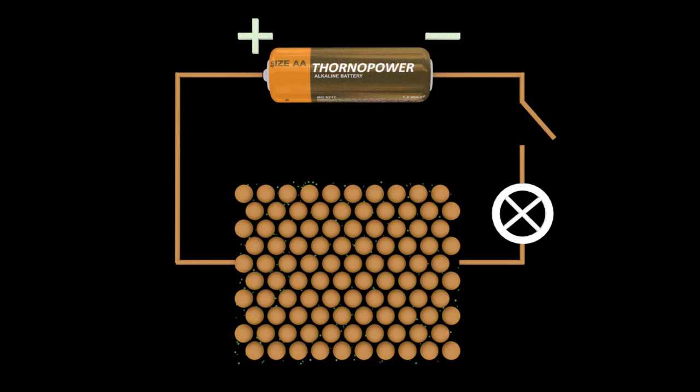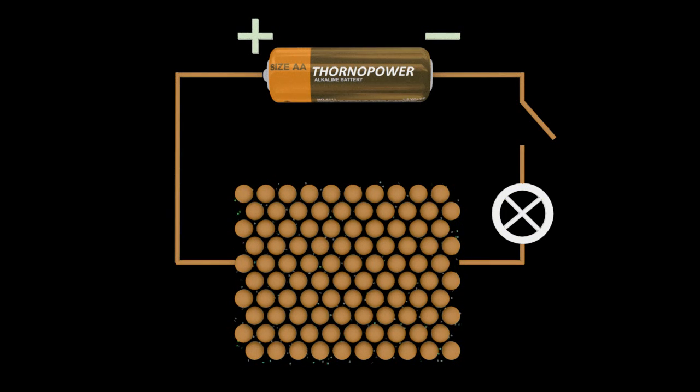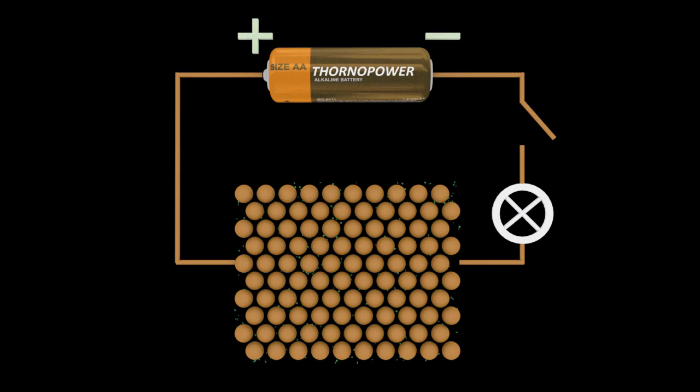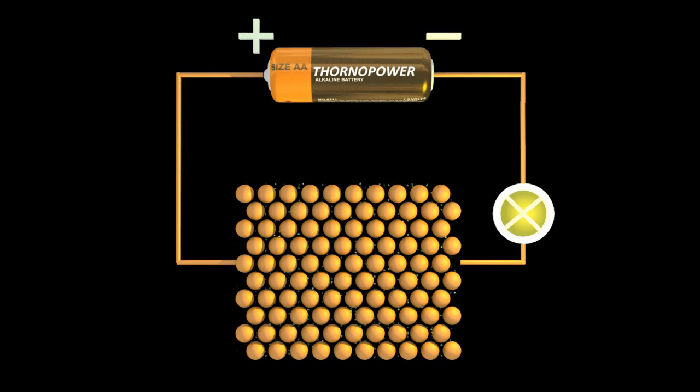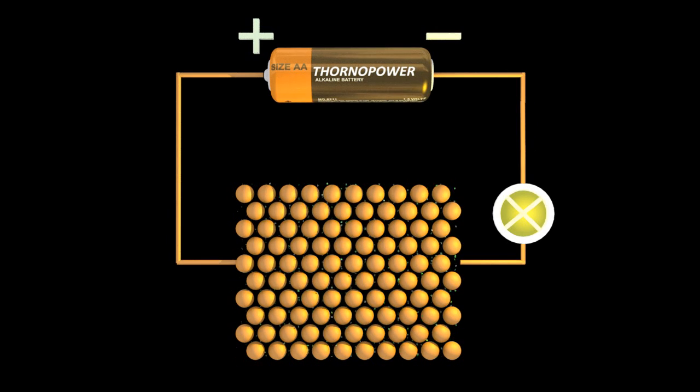So when I close the switch, electricity is now flowing around the circuit and you see the electrons are moving from the negative to the positive end of that piece of wire. So metals can conduct electricity because the electrons can move around the circuit and carry the charge.